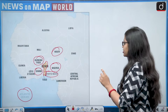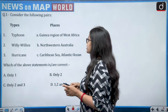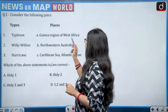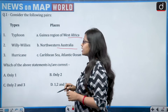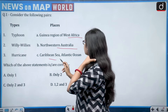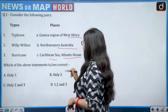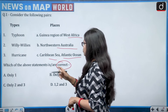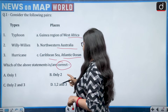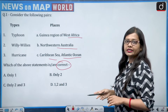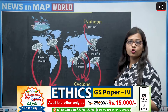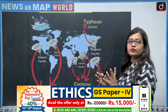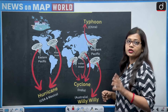Now for today's session: consider the following pairs — on one side types are given and on the other side the places. First, typhoon — Guinea region of West Africa. Second, willy-willy — northwestern Australia. Third, hurricane — Caribbean Sea or Atlantic Ocean. Which of the above statements are correctly matched: only one, only two, both two and three, or one, two and three?